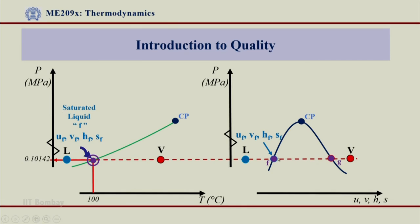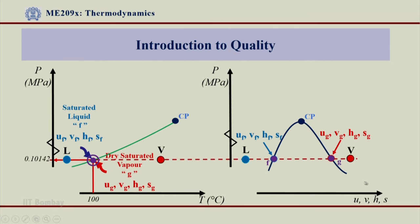If you recollect, the properties associated with saturated liquid are U_f, V_f, H_f, and S_f — everything is liquid on that line. On the saturated vapor line, which is the 100 percent vapor line, the properties for dry saturated vapor are U_g, V_g, H_g, and S_g. So we have two regions — saturated liquid and saturated vapor — and the properties for these two can be directly obtained from the steam table, from Table 3 as well as Table 1 and Table 2.